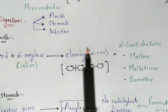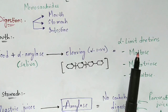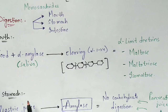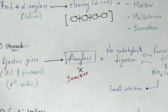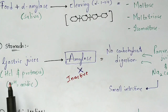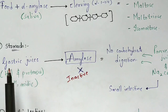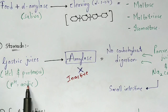After digestion in the mouth, the food enters into the stomach. The stomach consists of gastric juices, which include HCl (hydrochloric acid) and proteases enzymes.